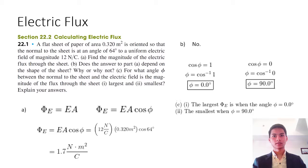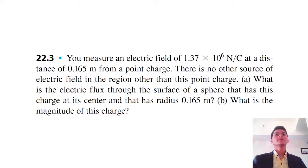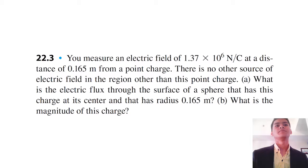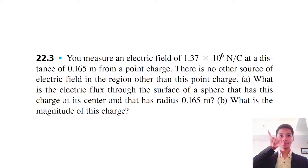You measure an electric field of 1.37 times 10 to the 6 newtons per coulomb at a distance of 0.165 meters from a point charge. There is no other source of electric field in the region other than this point charge. What is the electric flux through the surface of a sphere that has this charge at its center with radius 0.165 meters? What is the magnitude of the charge?